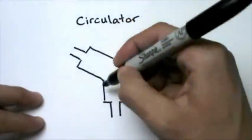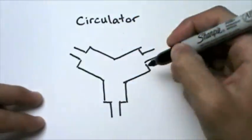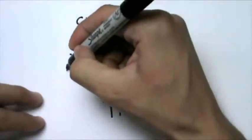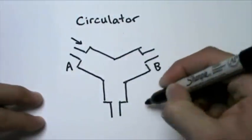When we uniformly apply a magnetic field to the center region and send a signal, let's give these names. Let's call this A, B, and C.